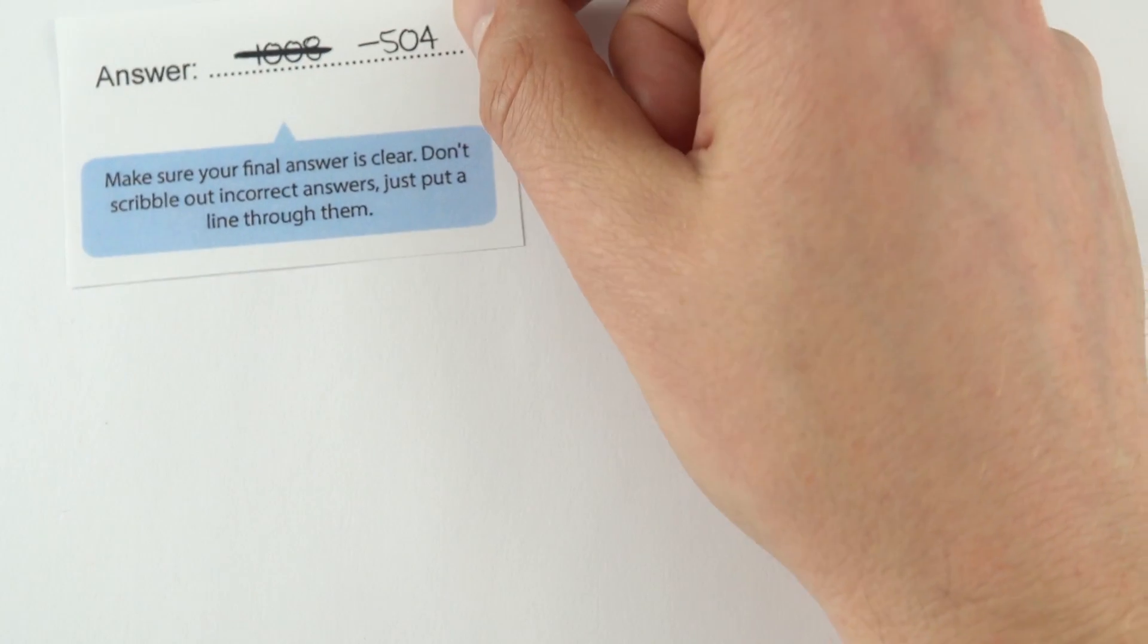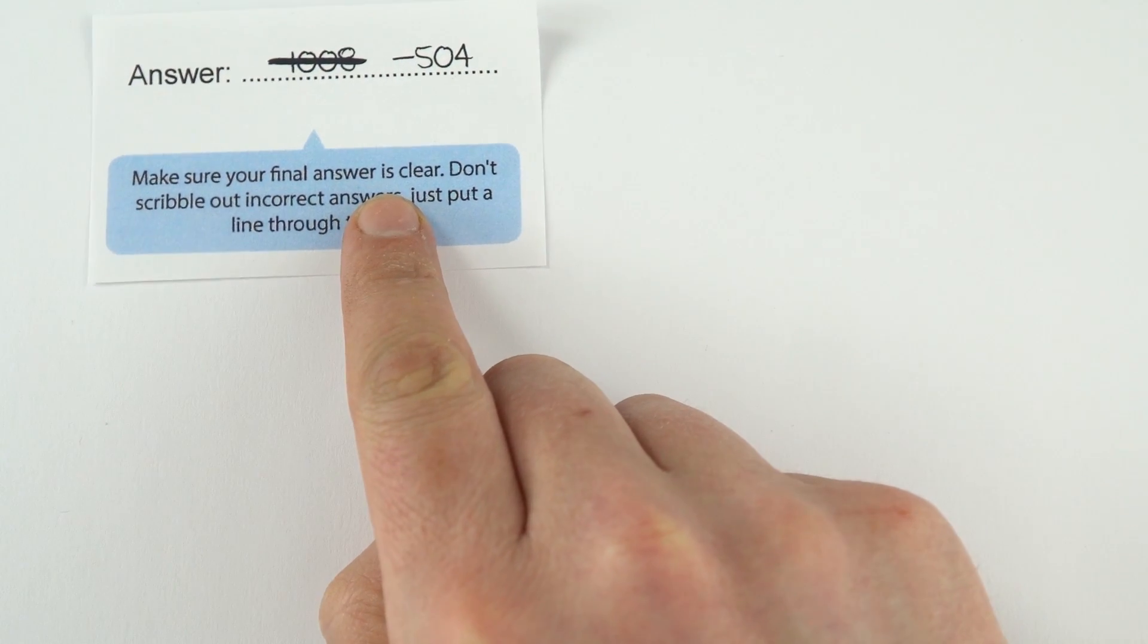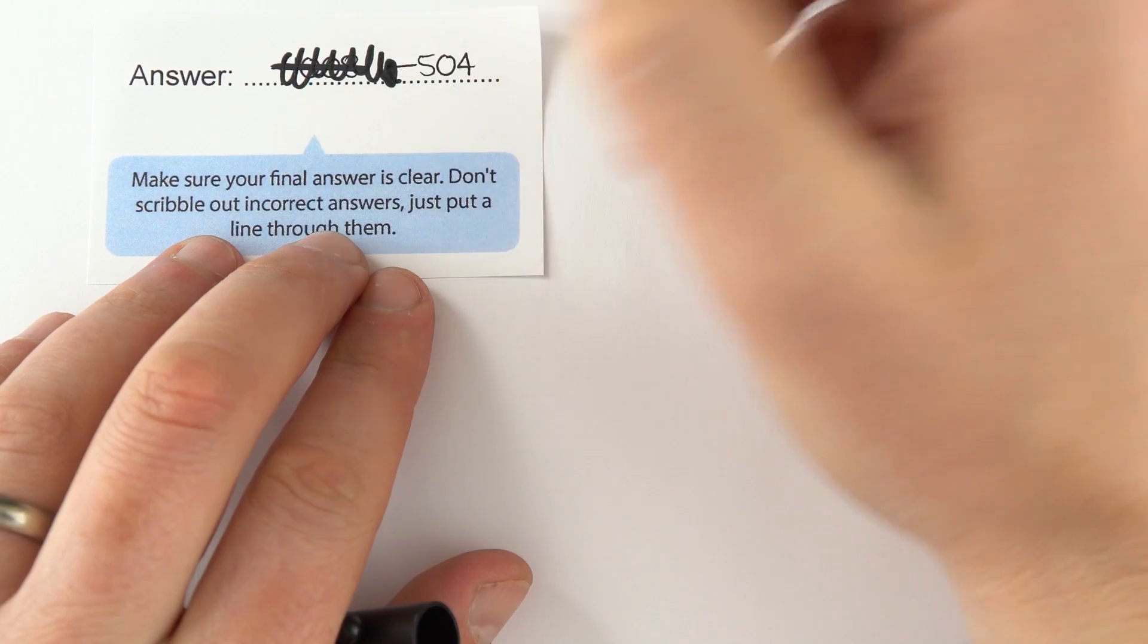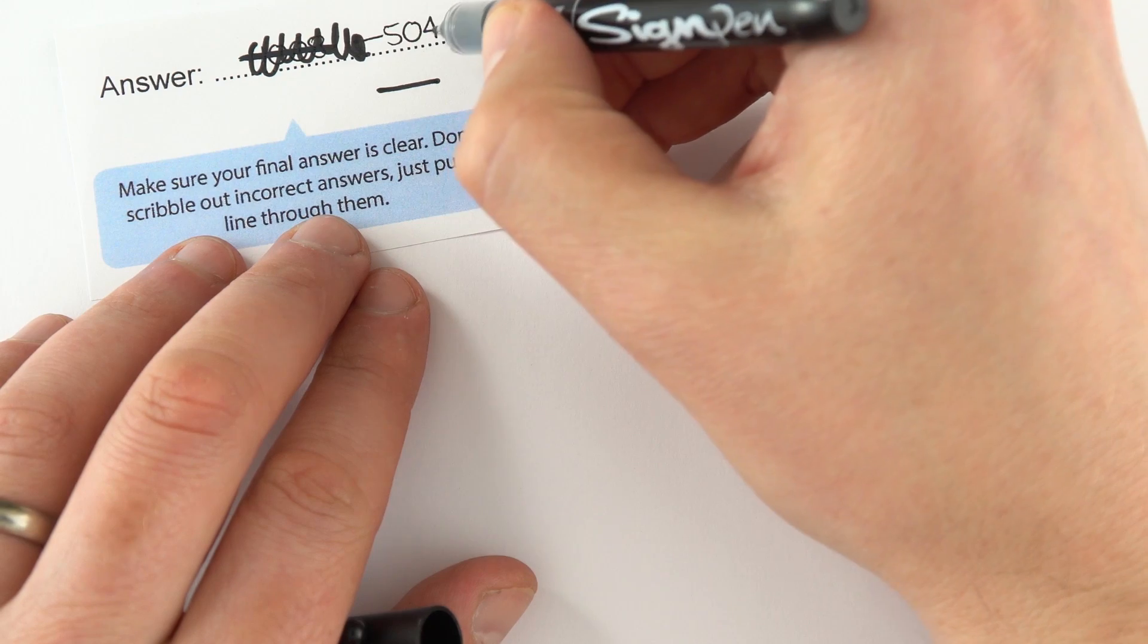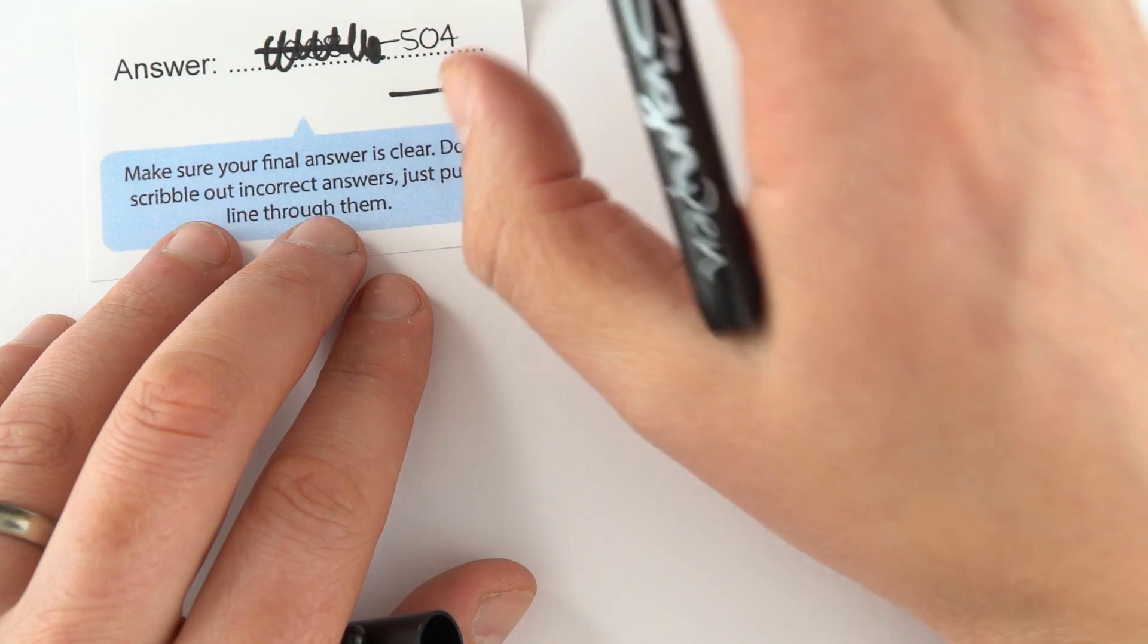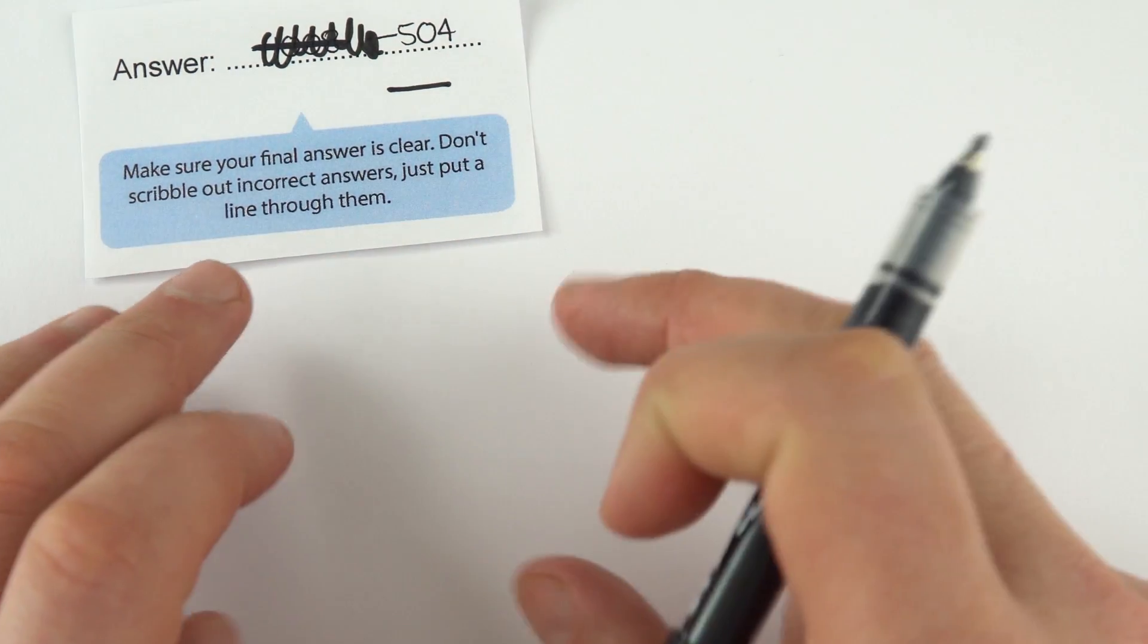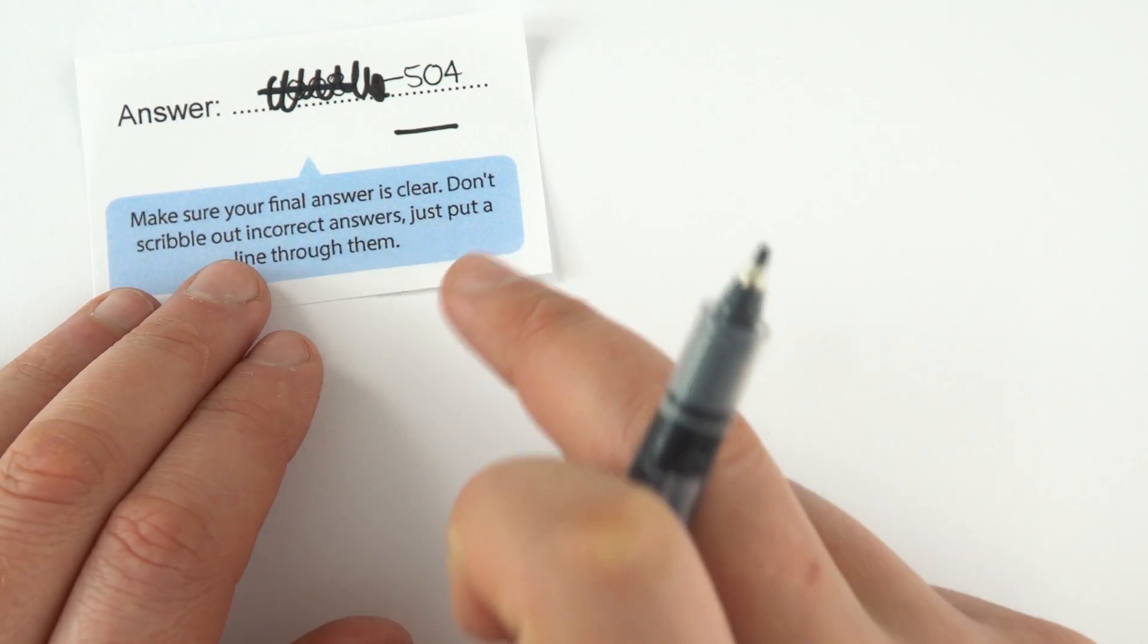A lot of these mistakes seem really obvious, things that you think you're not going to be doing, but this is what they found. You need to make sure that your final answer is clear. Don't be scribbling out your final answer so that your page ends up looking like this. If you put a small line through any wrong answers, they can see that's not the final answer, and then just write your correct answer to the side. Remember that people who mark exams are seeing hundreds of questions. Make your answer really clear, and it can guarantee that you've got the right marks.